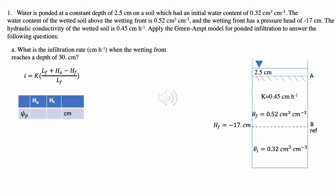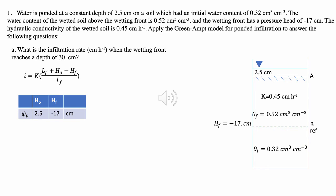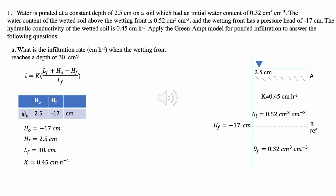We need to identify the pressure heads at both H_not and H_f. The pressure head at H_not is 2.5 centimeters, because there are 2.5 centimeters of water ponded at the soil surface. As stated in the problem, the pressure head at H_f, which is the wetting front, is negative 17 centimeters. So we know LF is 30 centimeters and K is 0.45 centimeters per hour.